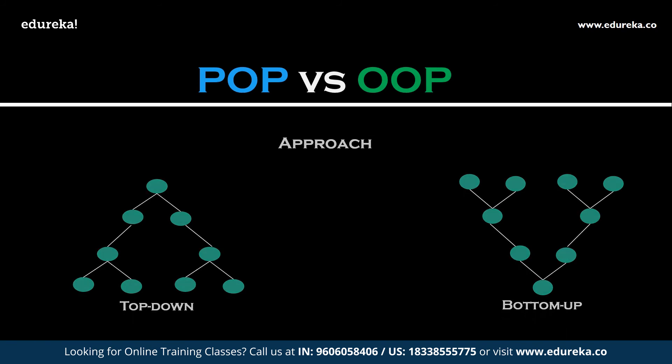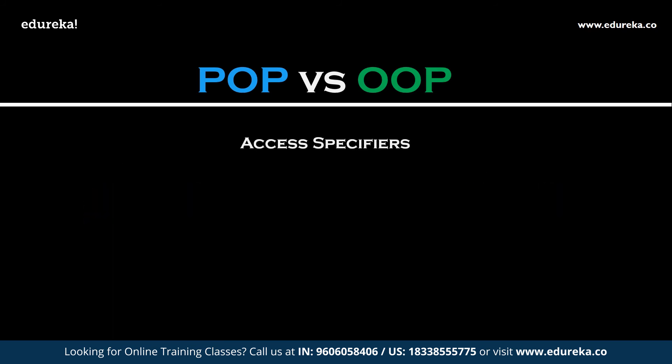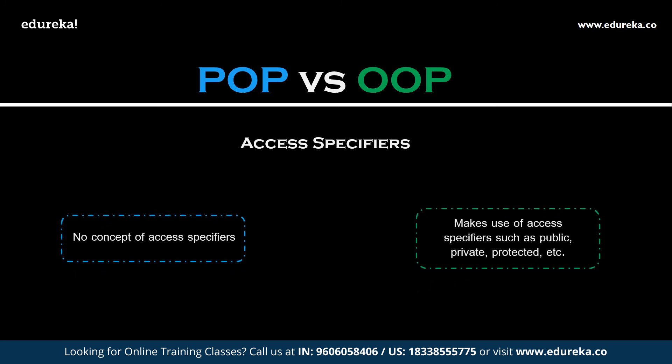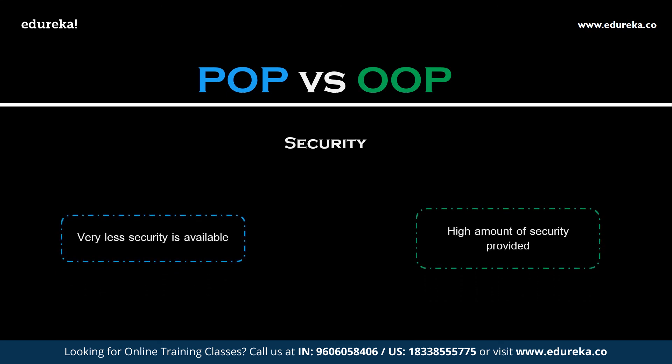In procedural programming, the program is divided into functions that are created to execute independent tasks. In object-oriented programming, programs are divided into objects. Regarding access specifiers — procedural programming has no concept of access specifiers, whereas object-oriented languages have access specifiers such as public, private, protected, etc. Regarding security — procedural programming provides some amount of security to the data as the data present within one function cannot be used by another function. However, object-oriented programming is very much more secure because it makes use of access specifiers. The private access specifier provides maximum security — if you have a class with private members, the data and functions declared private will be private to that class and no other class can access them.